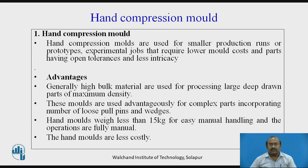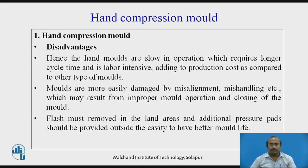Many advantages: materials are used for processing large deep-drawn parts of maximum density, hand molds are less costly, and they weigh less than 15 kg for easy manual handling — operations are fully manual. Some disadvantages: the molds are more easily damaged by misalignment and mishandling, which may result from improper mold operation and closing of the mold.